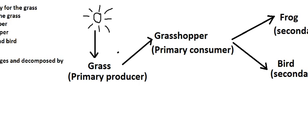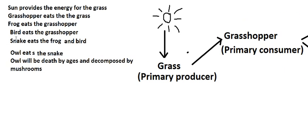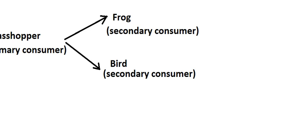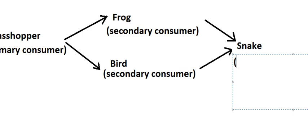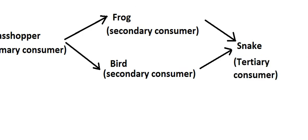Next, we can see that the snake eats the frog and the bird, so they will go into one consumer here. That is about tertiary consumer. So we write about the snake, and this is about tertiary consumer.